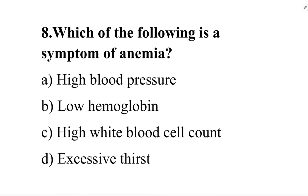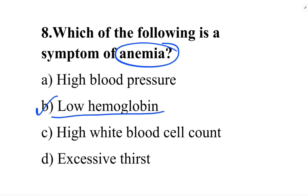Which of the following is a symptom of anemia? Option A: high blood pressure. Option B: low hemoglobin. Option C: high white blood cell count. Option D: excessive thirst. The correct answer is option B, low hemoglobin. Low hemoglobin is a symptom of anemia.